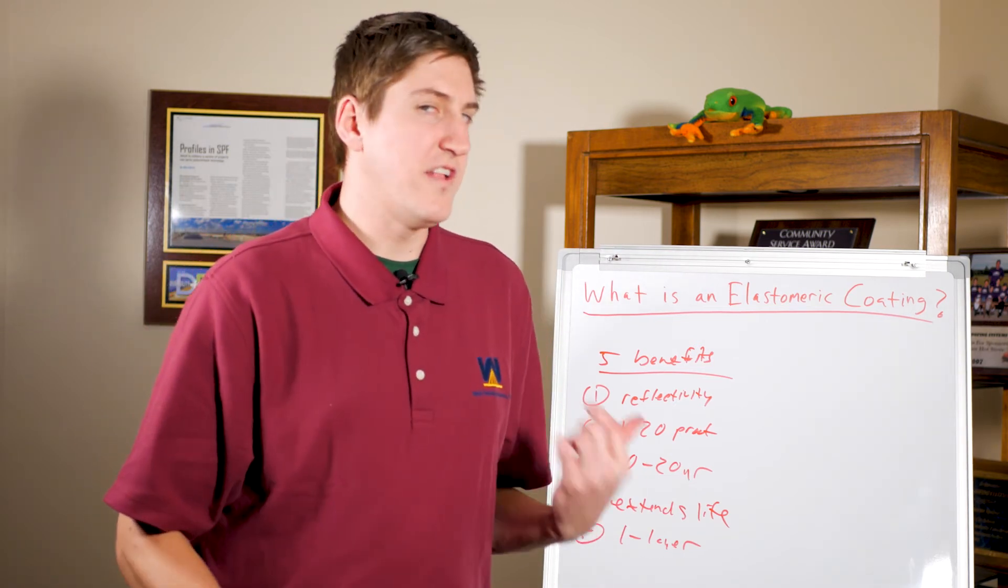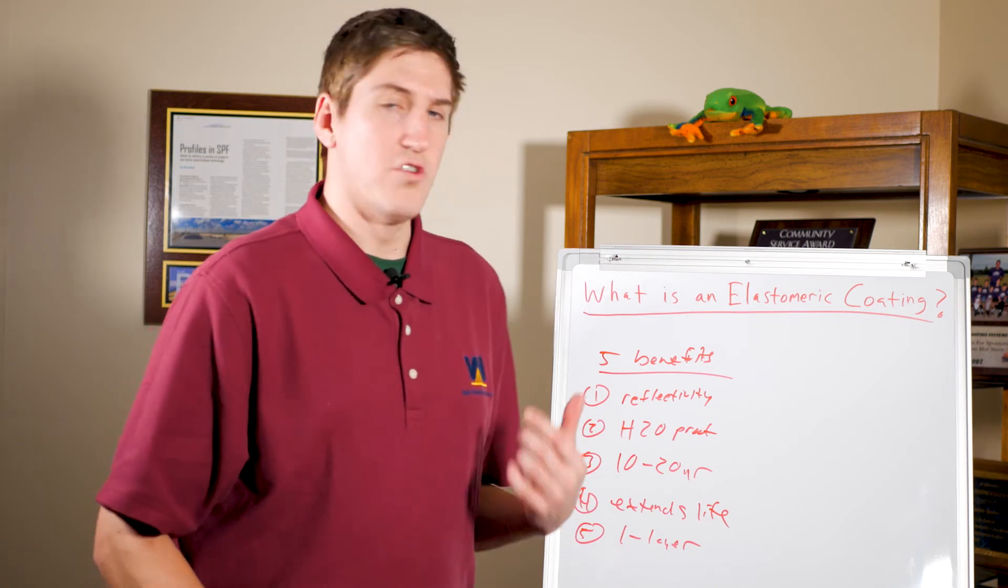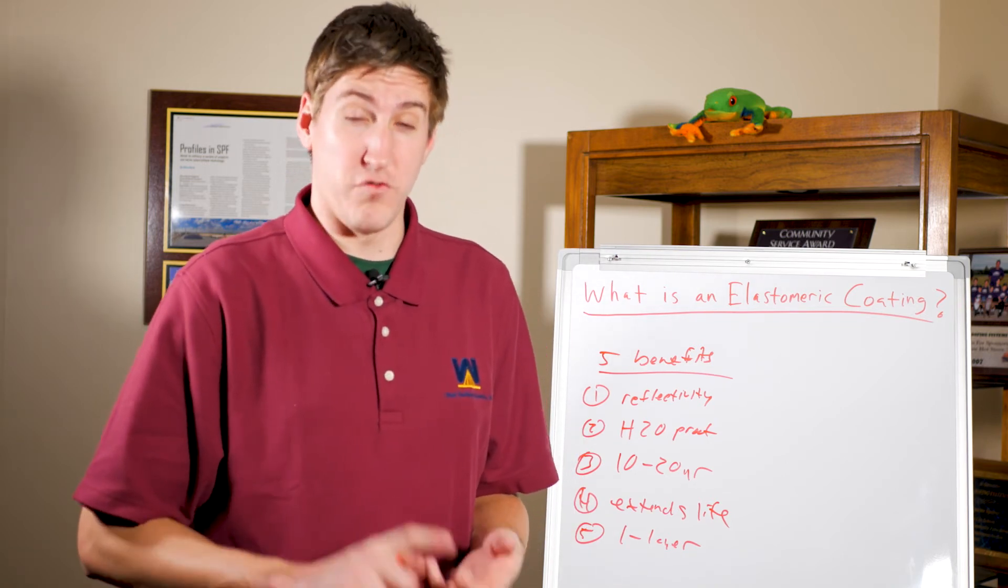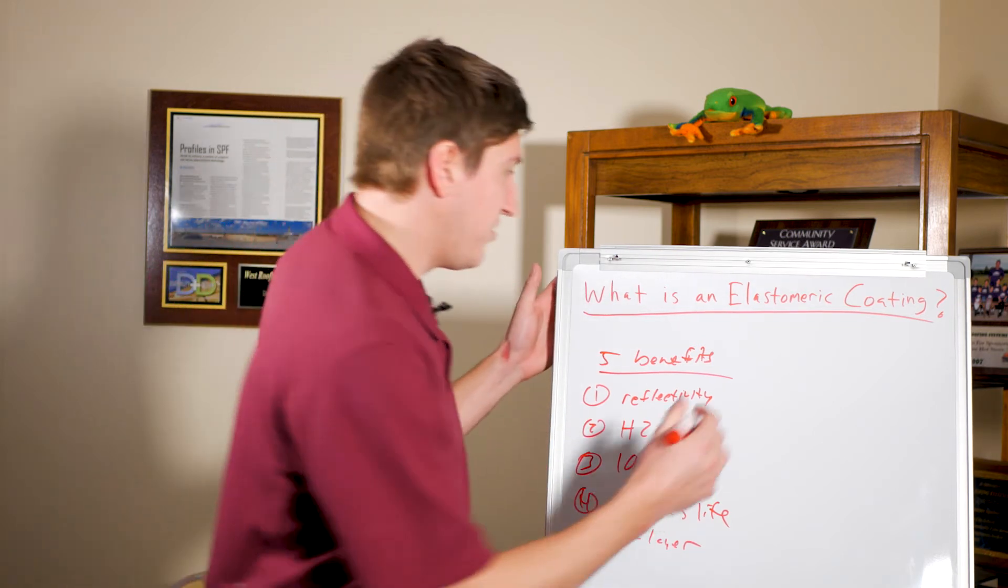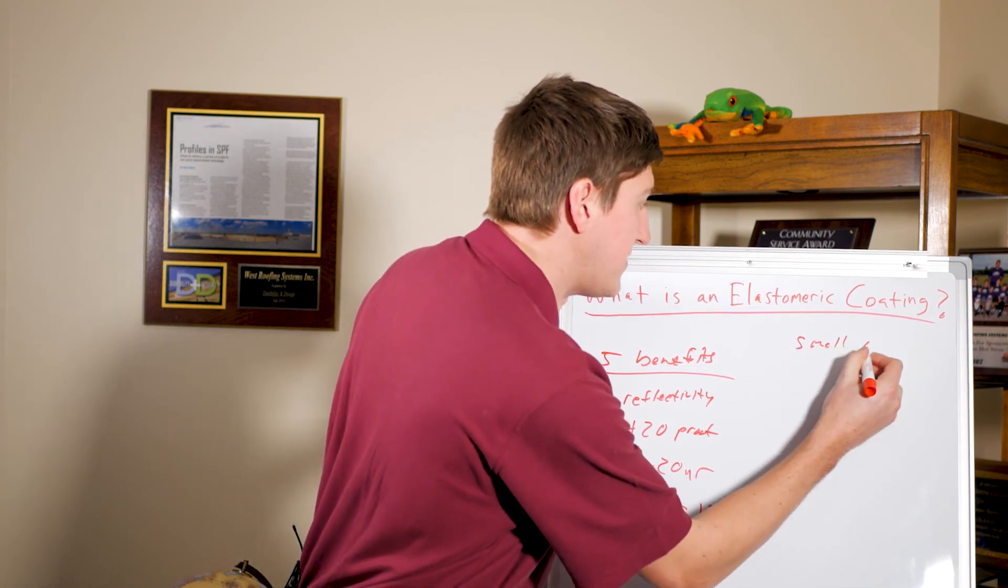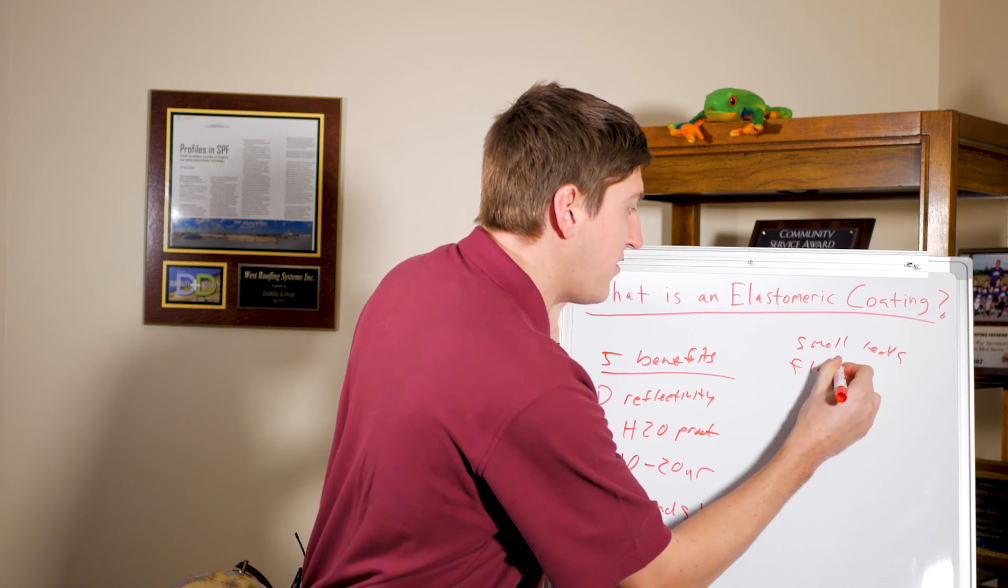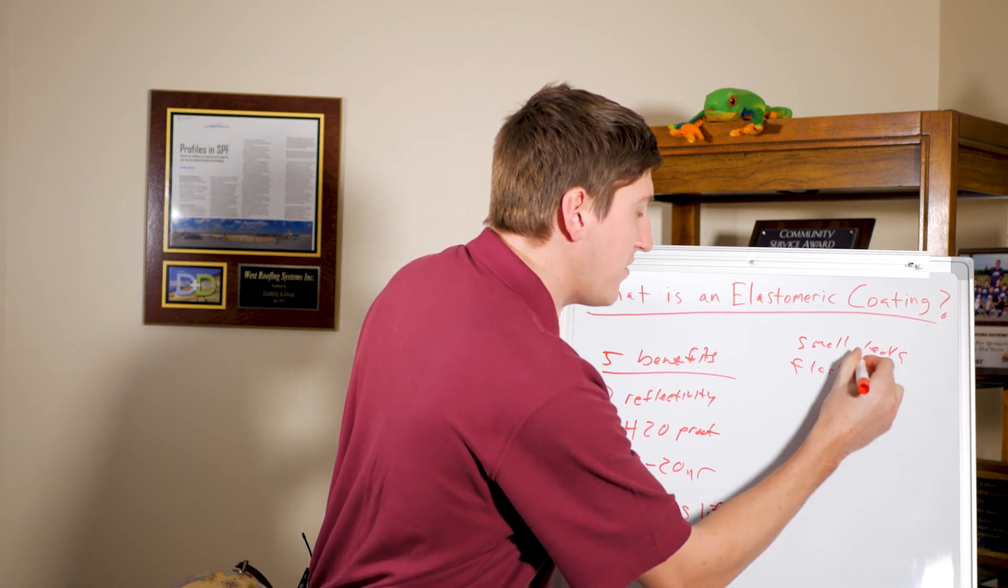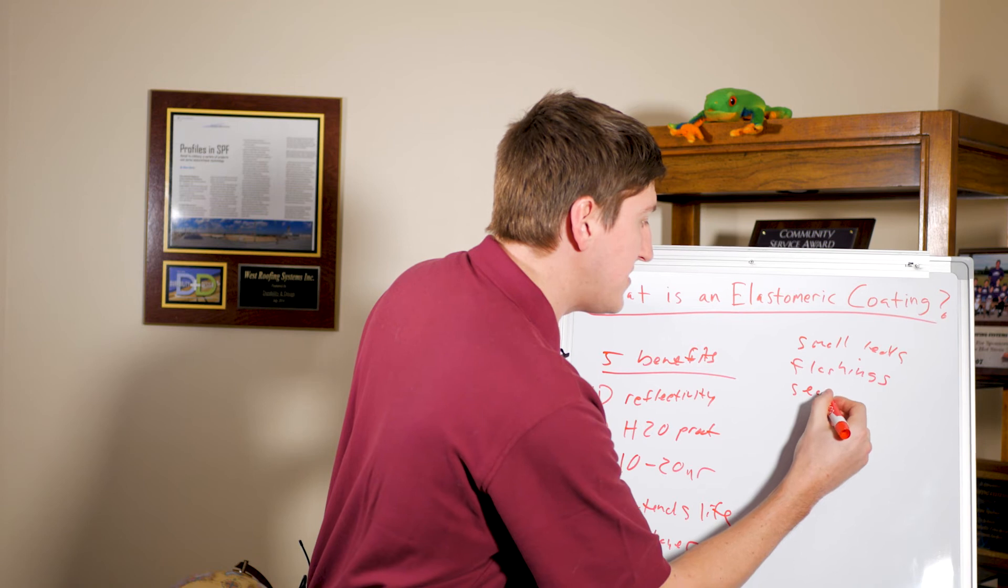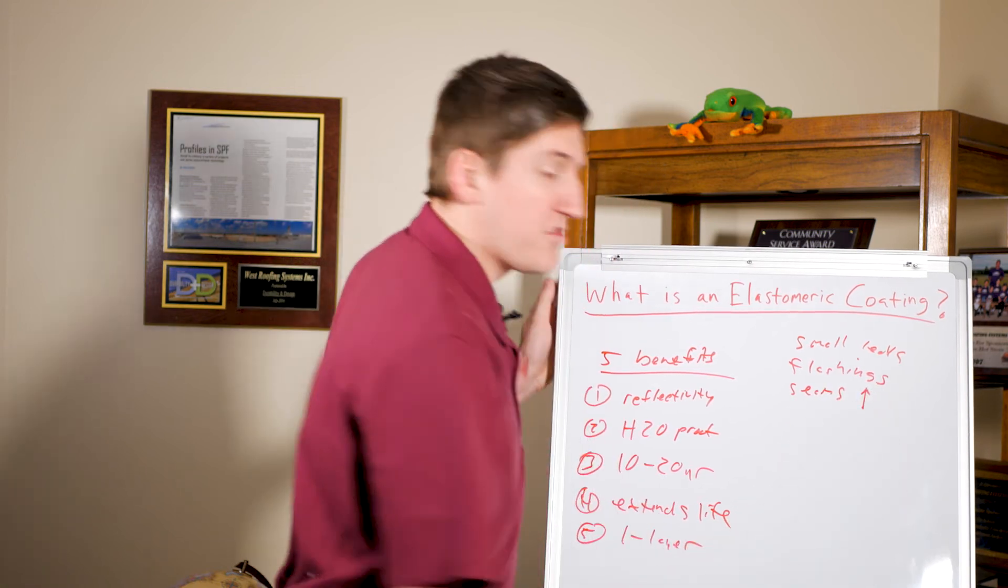So the best time to install elastomeric coating is when your roof's about to have some significant performance issues, and one of those would be small leaks, your flashings are wearing down, or your seams are starting to come up.